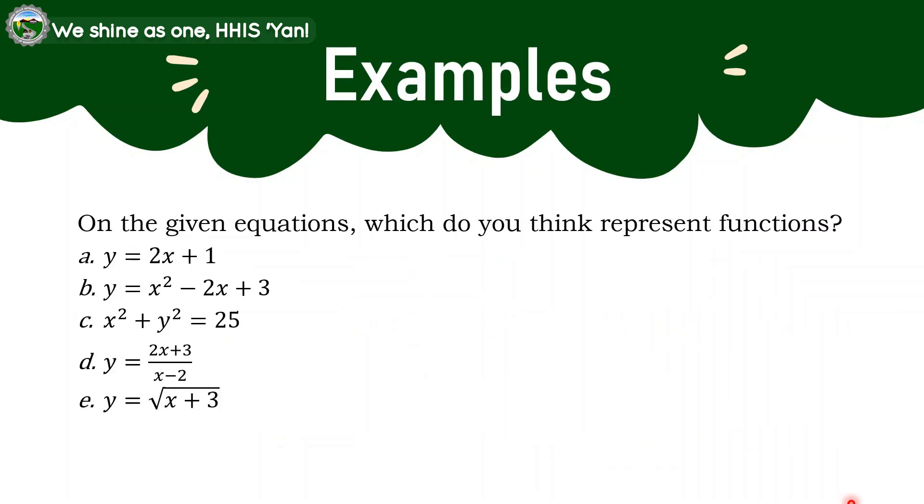Now, the examples when we are given our equations. For us to identify whether an equation is a function or not, we will be solving in terms of y first. Then when we yield to a single result, that is a function. If not, if the results are 2 or more, it is not a function. Let's say, example A, y is equal to 2x plus 1. So try to substitute a number to the x. When we get a single or a unique answer only, it's a function. Let's say 1, x be 1. So that would be y is equal to 2 times 1 plus 1, 2 times 1 is 2 plus 1, that's 3. So we just have a single number. So example A is a function.